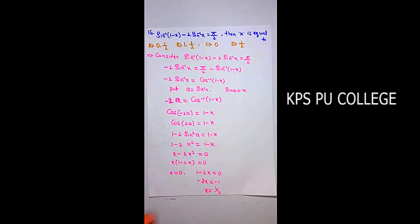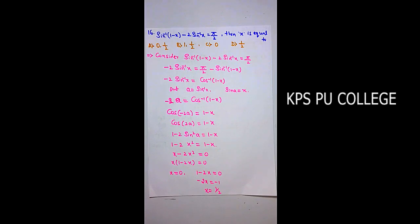Question 16 (MCQ): If sin⁻¹(1-x) - 2sin⁻¹(x) = π/2, then x equals: option (a) 0 and 1/2, option (b) 1 and 1/2, option (c) 0, option (d) 1/2.